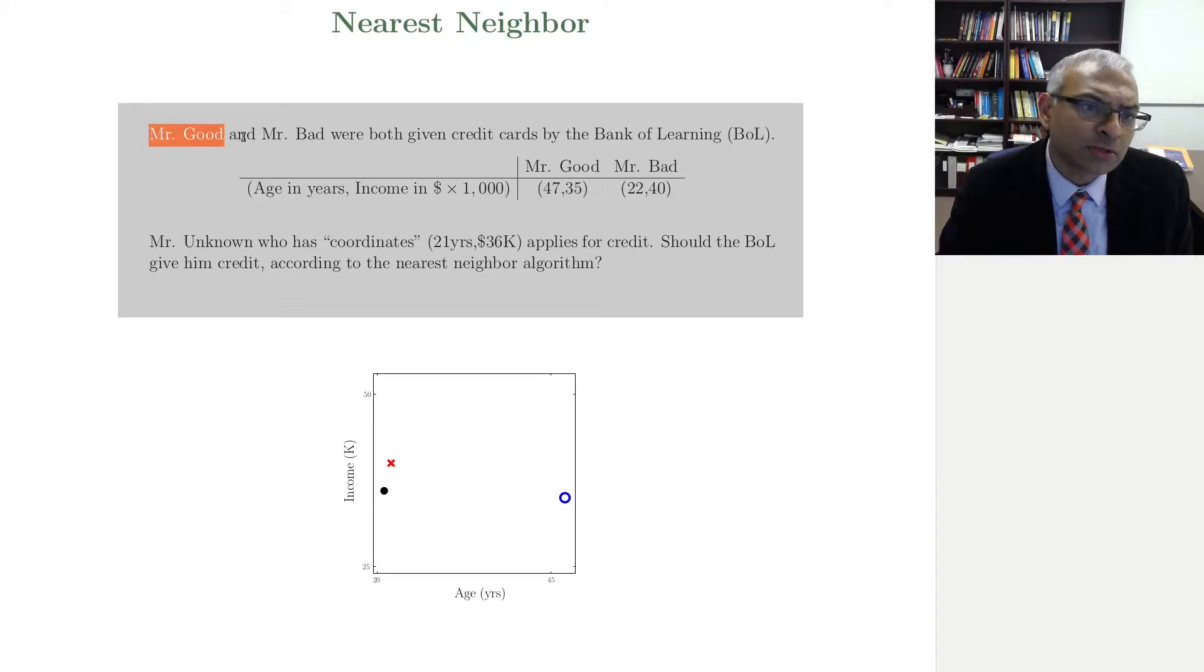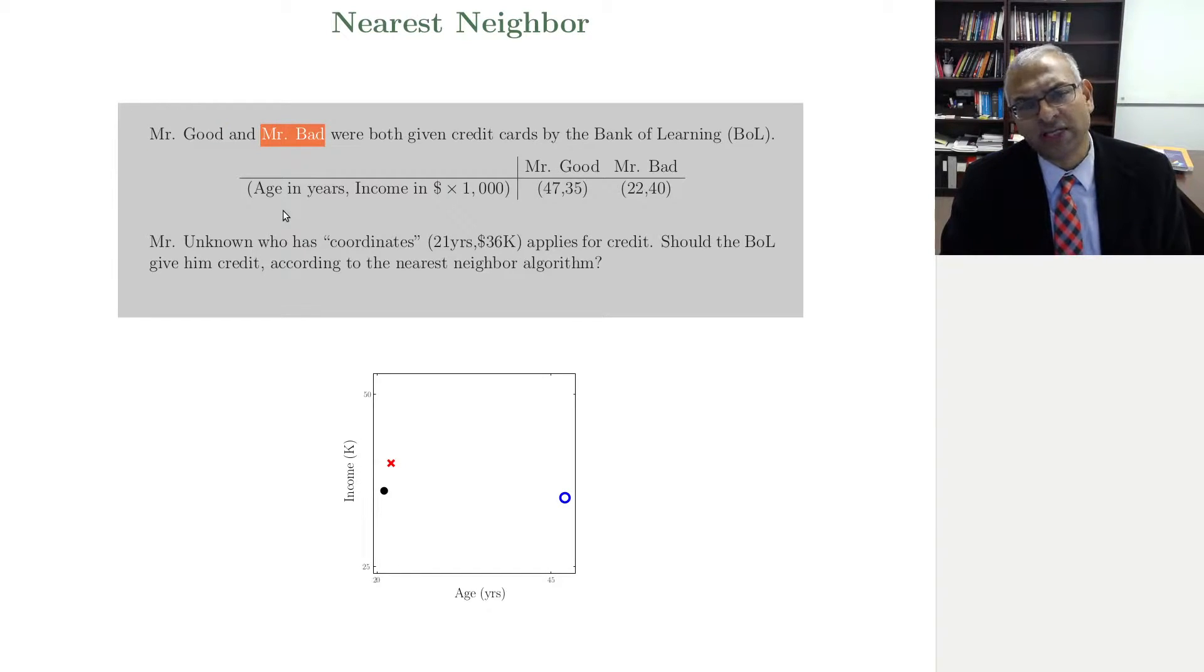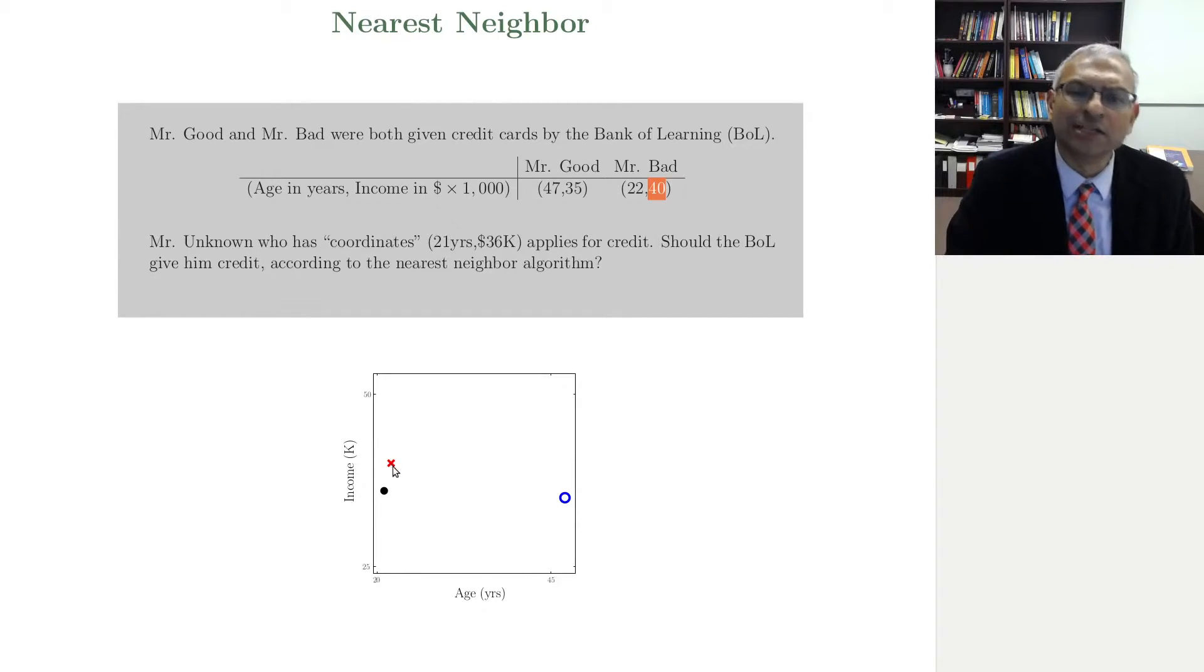It is a very simple example. You have Mr. Good and Mr. Bad. They were both given credit cards by the Bank of Learning. It turns out, as you can expect, Mr. Good paid off the credit and Mr. Bad did not. Now here's the data. I'm showing you the age in years and income of Mr. Good and Mr. Bad. Age in years, 45 years and income is in K, thousands of dollars. So income is 35K and Mr. Bad, 22 years old and income 40K. We can plot this data in the picture below. Mr. Good paid off his credit. His age is 47 and his income is 35K and that's the blue circle. Mr. Bad's age is much lower, 22, closer to 20, and has a higher income of 40K. That's an X.